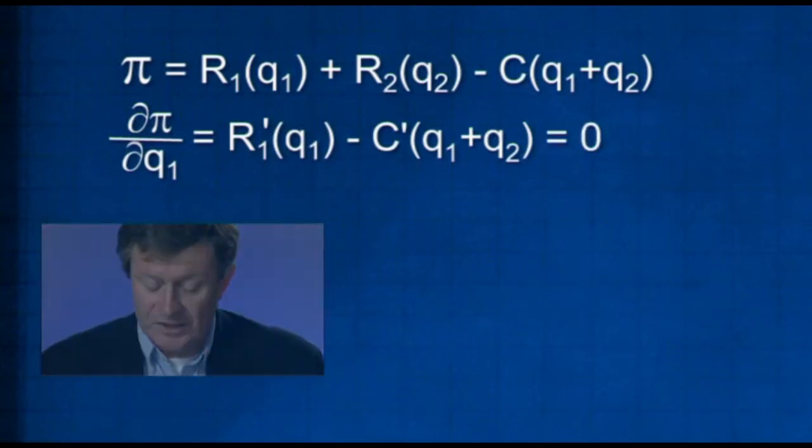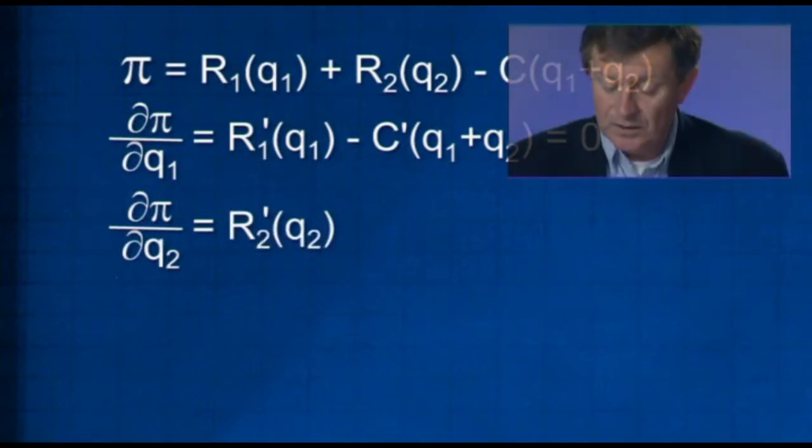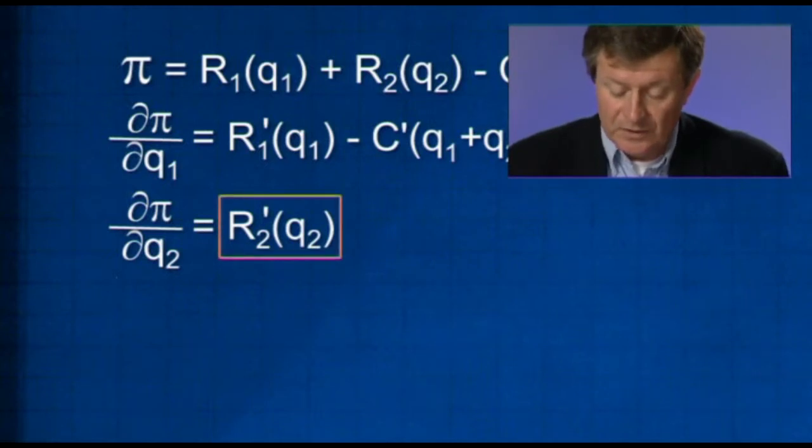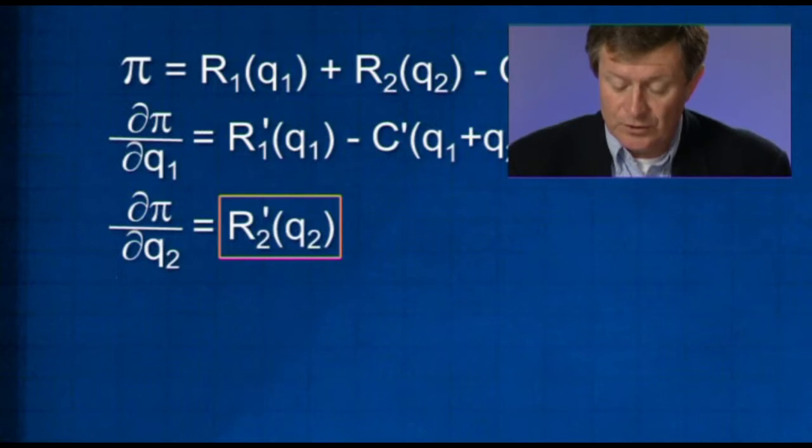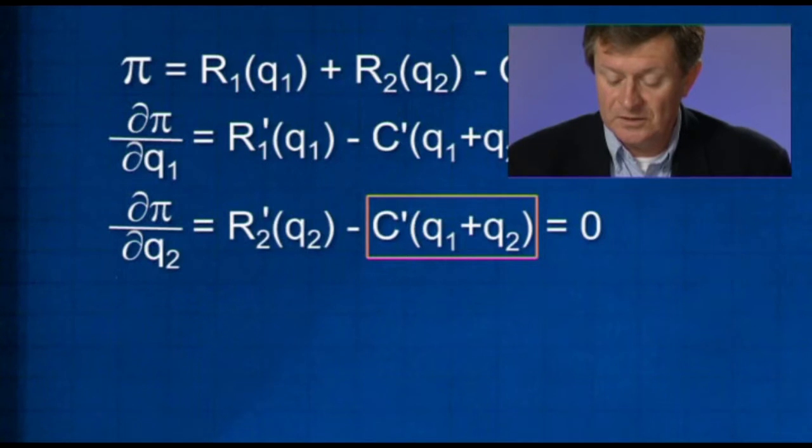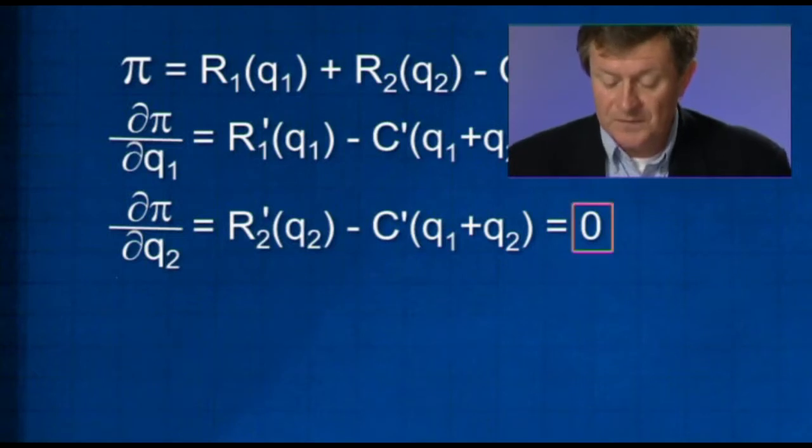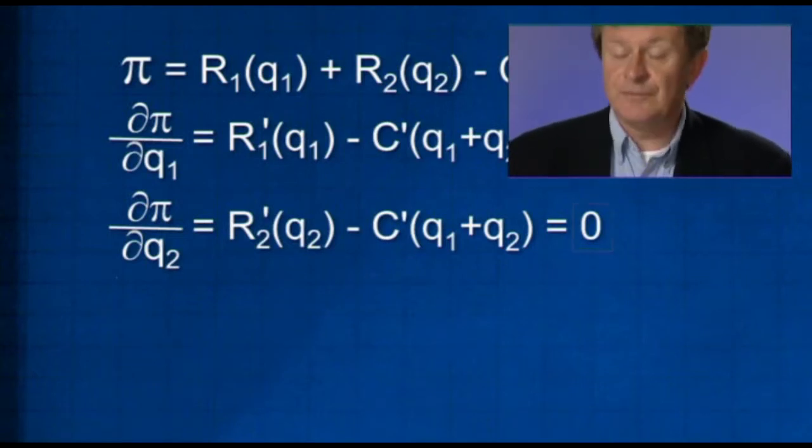Which will have to be equal to zero. At the same time, dπ/dQ2 will have to be equal to zero. So differentiating the profit function with respect to Q2, we get nothing from the first term. The derivative of R2 with respect to Q2 minus, now we differentiate the cost function, C prime, just as before, has to be equal to zero. So these are the two conditions that have to apply.